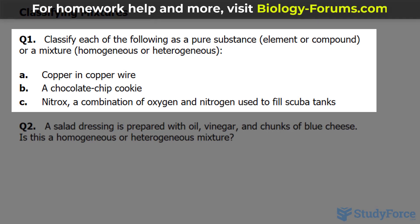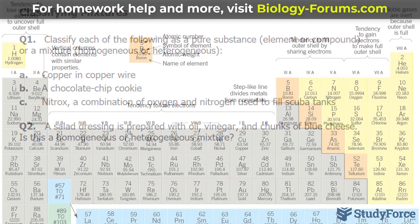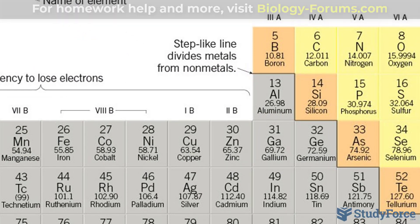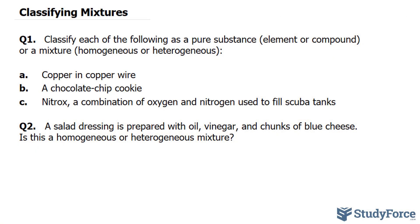For question A, copper in a copper wire. Now remember, copper, if you take a look at the periodic table, is an element. And in order to make copper wire, you need elemental copper. So this is pure copper. This is why copper is expensive — if you were to find pure copper from old pipes or appliances, you can actually sell it for a lot of money. So this is an element.